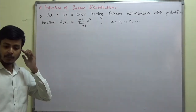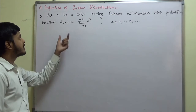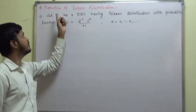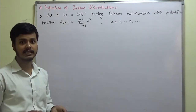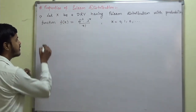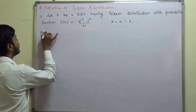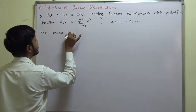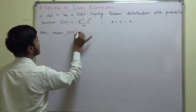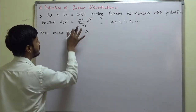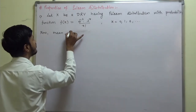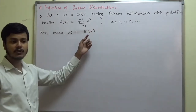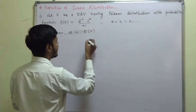This is the probability function. Now, what we are interested in this video lecture is the properties, and as I told you, we are going to take the mean first. Mean, which is the expectation of x, is denoted by μ. So μ is equal to E[x].